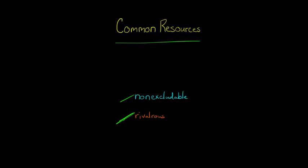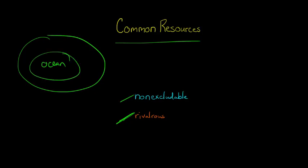I want to give you an example to explain what those terms mean. Let's take the ocean. It's very difficult to exclude people from being able to use the ocean. So if you're a country and you think that there's a problem with overfishing, it might be difficult to prevent people from going into the ocean and fishing. So that's what we mean by non-excludable.